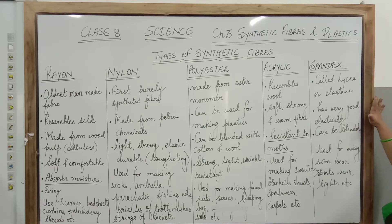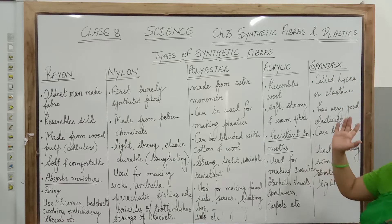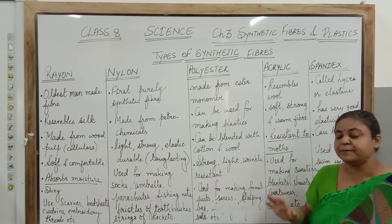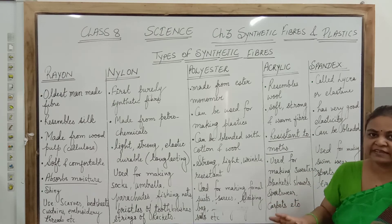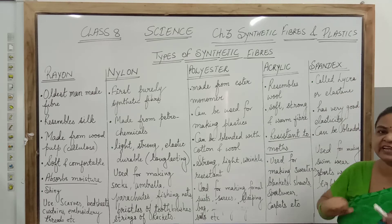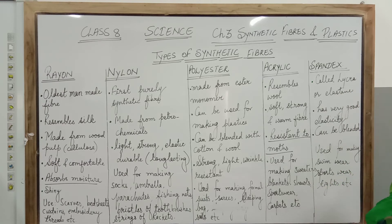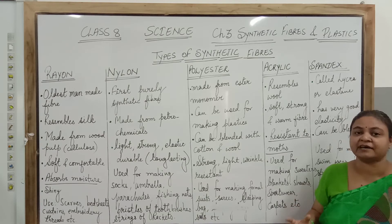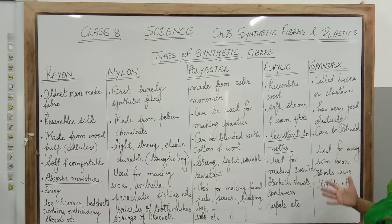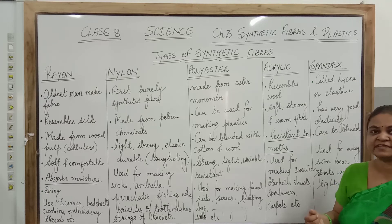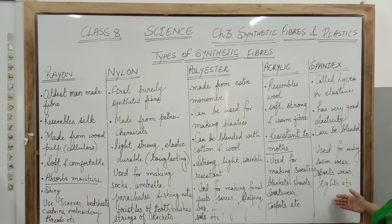Last but not the least is spandex, also called lycra or elastic. Although most synthetic fibers have the property of elasticity, exceptional elasticity is seen in lycra or spandex — it is the most elastic one. That is why it is mostly used for making tight-fitting garments like tights and leggings. It is used for swimming suits and sportswear.